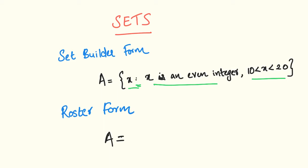If the conditions are satisfied, we will list the values of x in Roster Form. It is an even integer, and the value of x starts from 10 to 12.